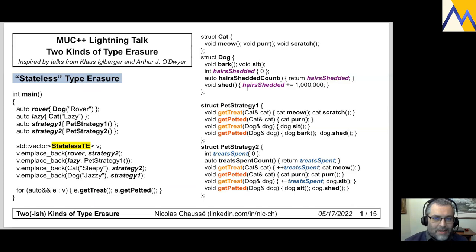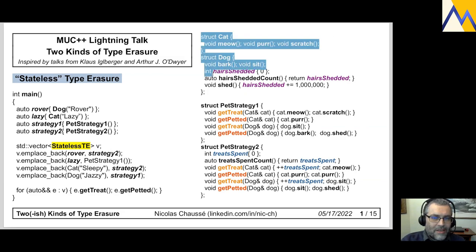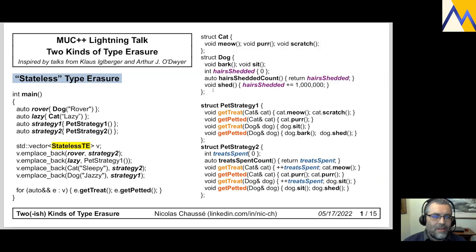As Klaus explained, I have here two very separate and independent classes, cat and dog, that share absolutely nothing in common — no common superclass, no common interface or anything like that.